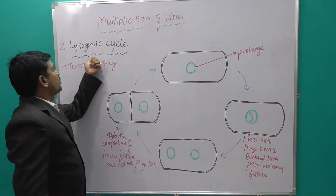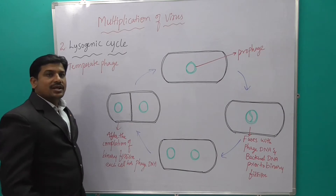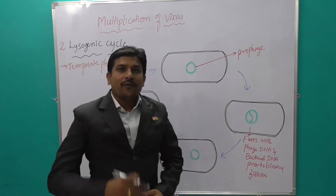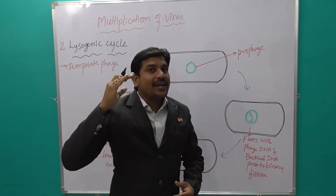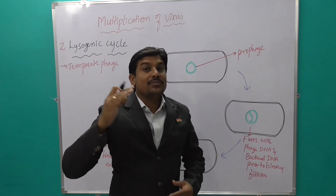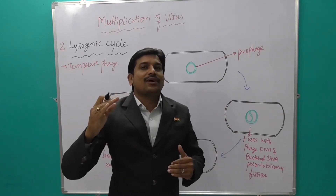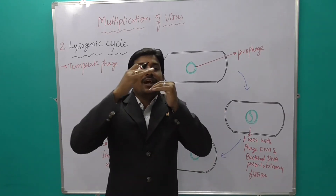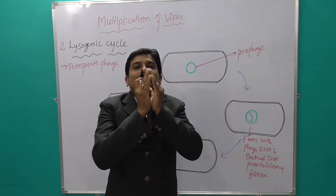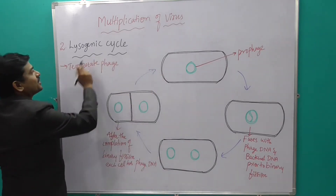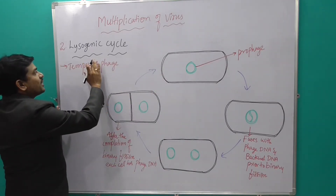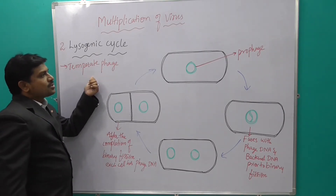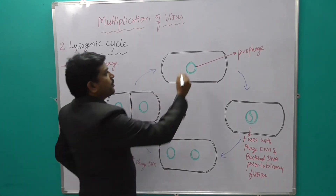The second type is the lysogenic cycle. When bacteriophages attack E. coli bacteria, there is no lysis of the cell — lysis would make it a lytic cycle. Here, the phage DNA and bacterial DNA are simply fused together. This is called the lysogenic cycle, which is also known by another name: the temperate phage.